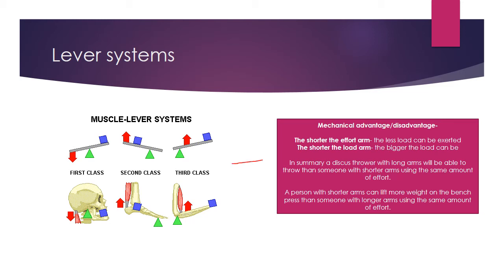So there's also something we need to look at called mechanical advantage and mechanical disadvantage. This states that the shorter the effort arm, the less load can be exerted, and the shorter the load arm, the bigger the load can be. To summarize, a discus thrower with long arms will be able to throw the discus further than someone with shorter arms because they'll be able to generate more speed.